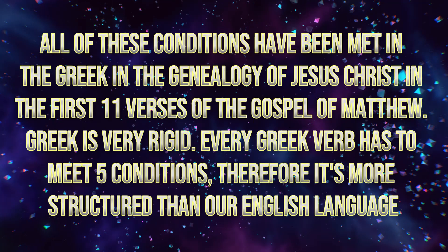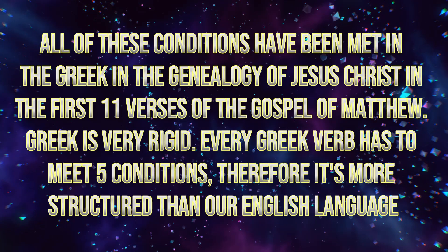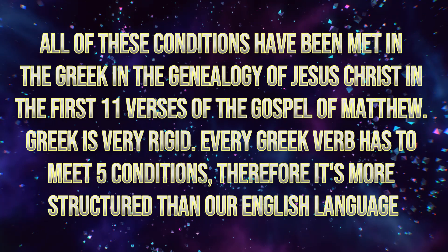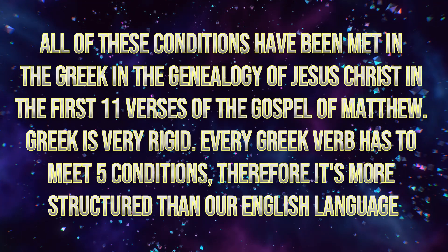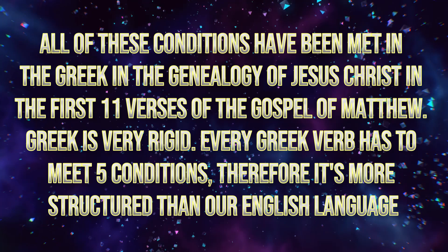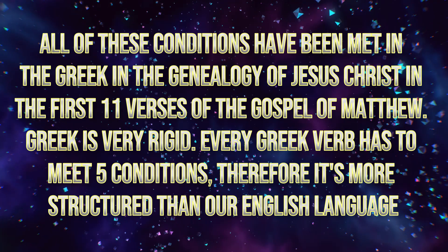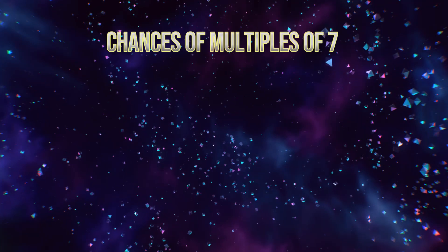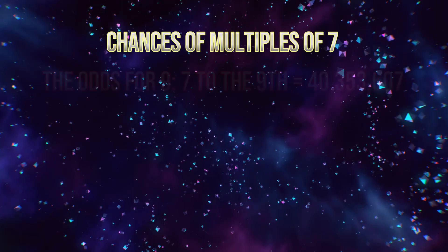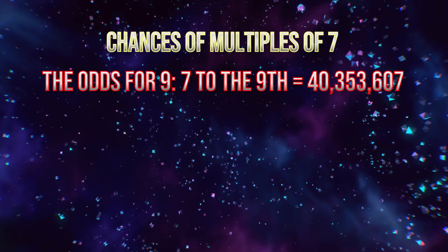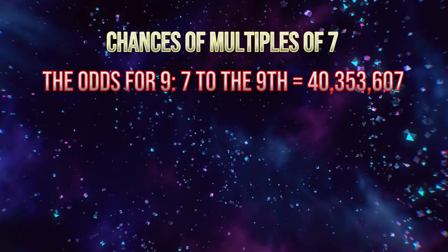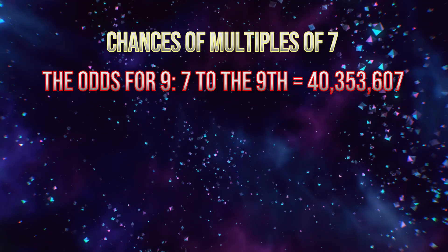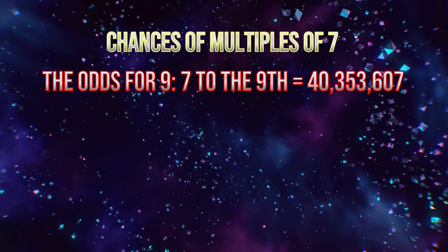All of these conditions have been met in the Greek in the genealogy of Jesus Christ in the first 11 verses of the Gospel of Matthew. Greek is very rigid — every Greek verb has to meet five conditions, making it more structured than our English language. The chances of multiples of 7: the odds for nine of these features taking place would be 7 to the ninth power, which would equate to 40,353,607.